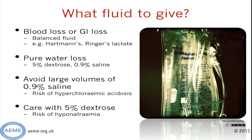Knowing the fluid missing then determines what to give to replace it. For blood loss or GI losses, use a balanced fluid such as Hartmann's or Ringer's lactate. For pure water loss, either saline or dextrose can be used, but be careful using large volumes of either. Saline has large amounts of chloride, which can reduce renal perfusion in a hypovolaemic patient and cause acidosis. Dextrose solutions can cause hyponatraemia, which older people are vulnerable to anyway due to the poor concentrating ability of their kidneys.